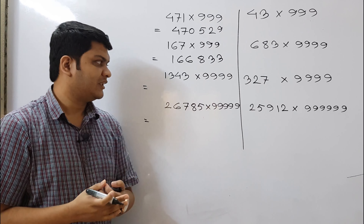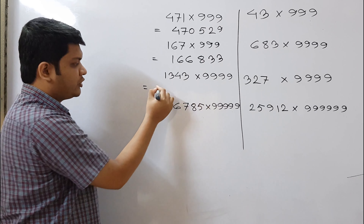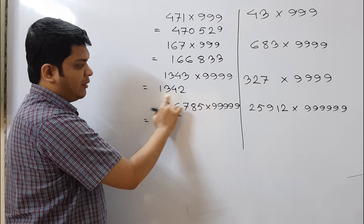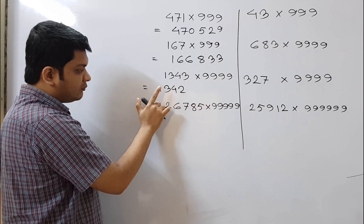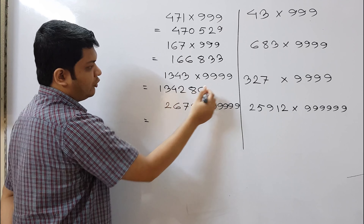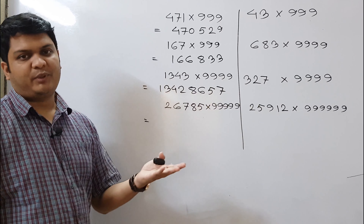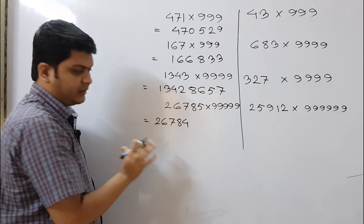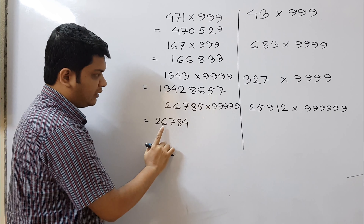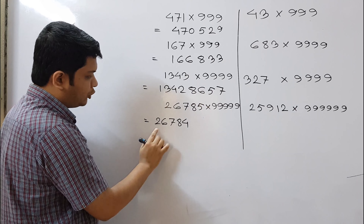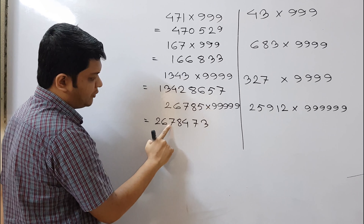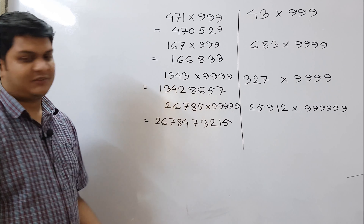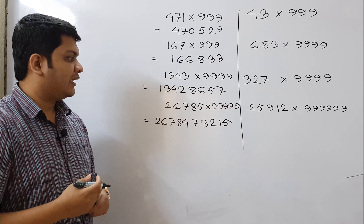For 1343 × 9999: first write 1342, then subtract each digit from 9 — 9 minus 1 is 8, 9 minus 3 is 6, 9 minus 4 is 5, 9 minus 2 is 7. Result: 1342 | 8657. For 26784 × 99999: write 26783, then subtract from 99999 — getting 7, 3, 2, 1, 5. Result: 26783 | 73215.